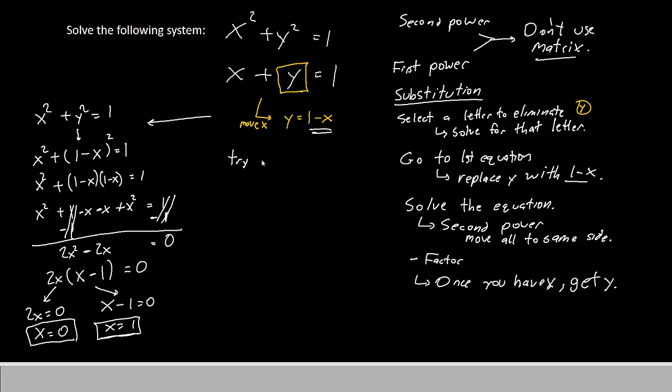So let's try x equals 0. Since y is equal to 1 minus x, y is equal to 1 minus 0, which is 1. Therefore, our first answer is 0, 1. When x is 0, y is 1.